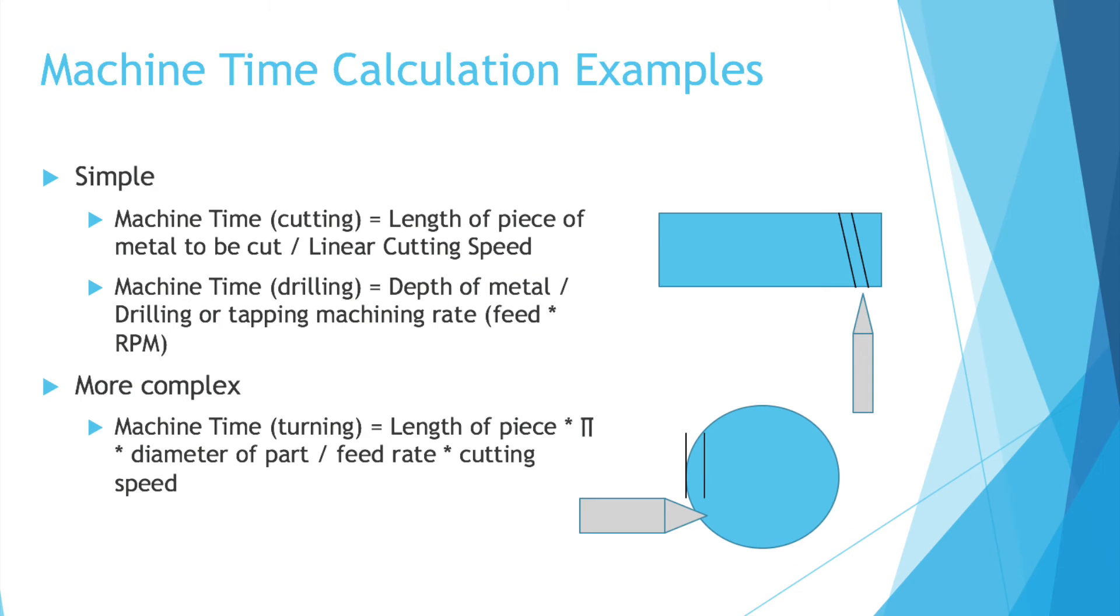So here's some machine time calculation examples. Simple. Machine time of something cutting an object. You would take the length of piece of metal to be cut, so how long is the thing you're cutting, divided by the linear cutting speed. So imagine you're just running a plank of wood over a table saw. Say it's six inches long and you cut at an inch a second. It would take you six seconds to cut through that plank of wood. Pretty basic, right?